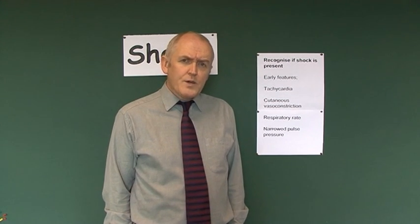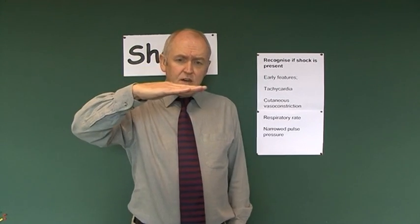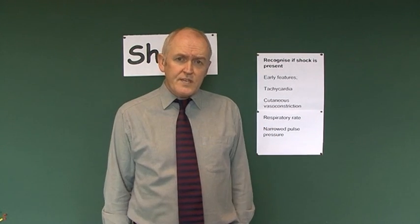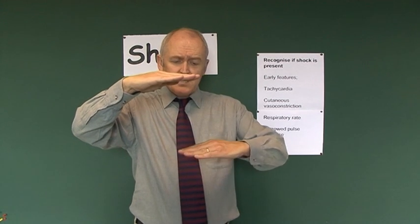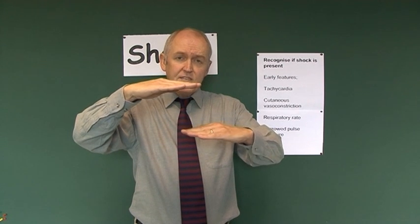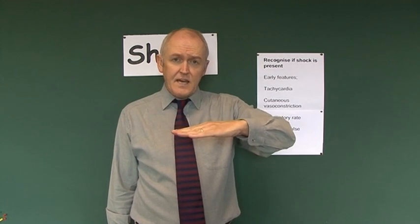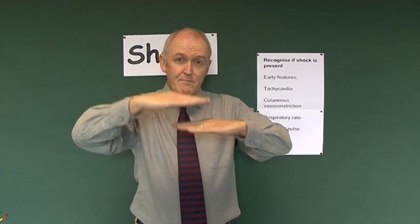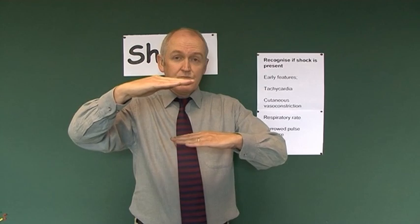There'll also be a lowered pulse pressure. Pulse pressure is the difference between the systolic and the diastolic blood pressure. As shock develops, the systolic pressure may come down, but the diastolic pressure tends to be maintained as a result of peripheral vasoconstriction, at least for a period of time. So you can have maintained diastolic pressure but a reduction in systolic pressure, meaning the pulse pressure is reduced.